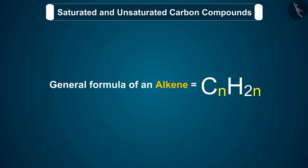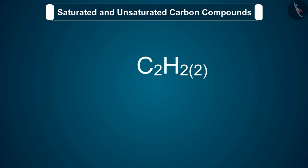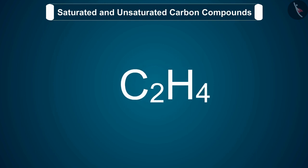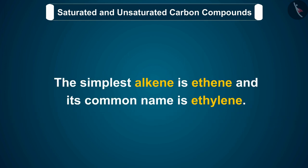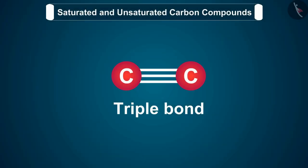The general formula of an alkene is CnH2n, where n is the number of carbon atoms in its molecule. For example, if an alkene has two carbon atoms, then n equals 2 and its molecular formula will be C2H4. Similarly, when n equals 3, we get propene. The simplest alkene is ethene, and its common name is ethylene.